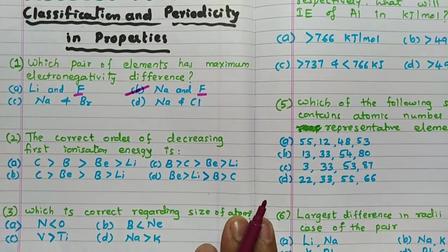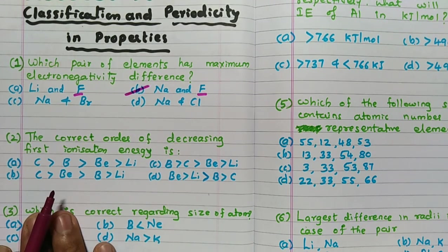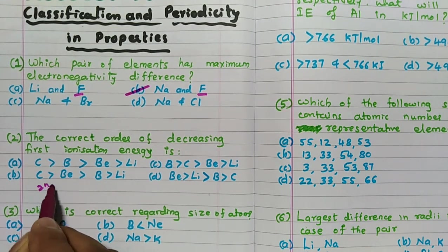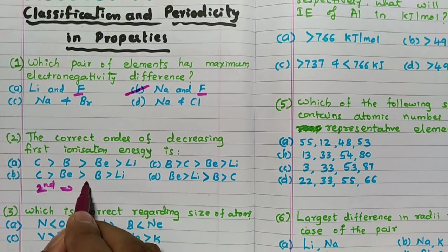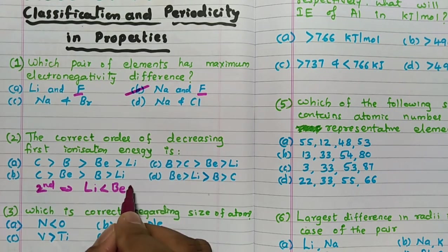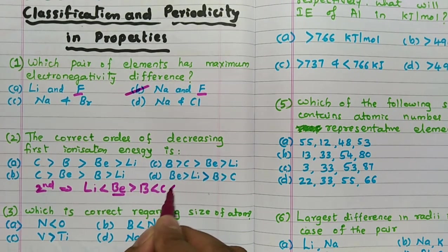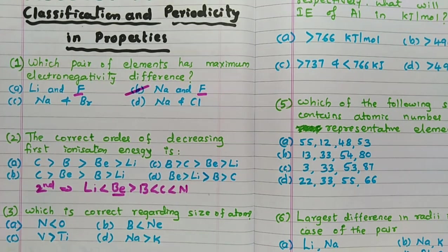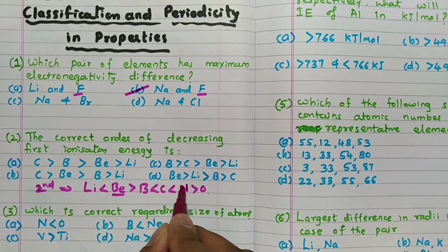The correct order of decreasing first ionization energy: all these elements are from the second period. In case of second period elements, remember there are two exceptions. Definitely lithium is less than beryllium — no doubt, because smaller size means higher ionization energy. But beryllium is more than boron because of the 2S² configuration of beryllium. Then boron is less than carbon, less than nitrogen — no doubt because of size. But nitrogen is more than oxygen due to the half-filled orbital of nitrogen.